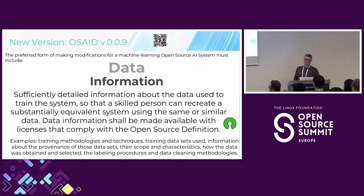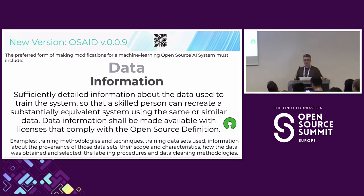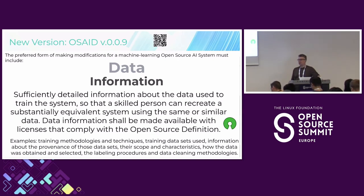Those last two questions are getting at a tension between full transparency in the dataset and the idea that some data is hard to share. If it's public data, you should be able to list it — maybe you can't reshare it because of various laws. But what do you do about data that can't be shared or otherwise couldn't be accessed? Coming back to the healthcare example, is it even possible to have open source healthcare AI if you can't see the underlying data? That's the underlying tension we're addressing.